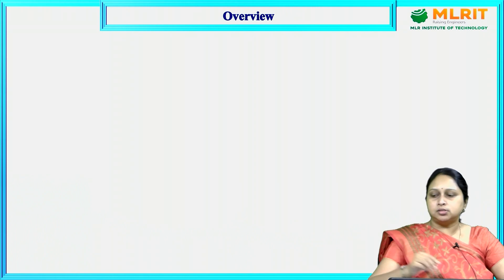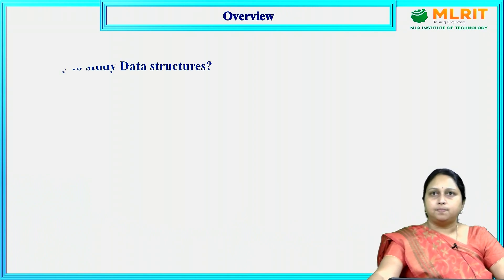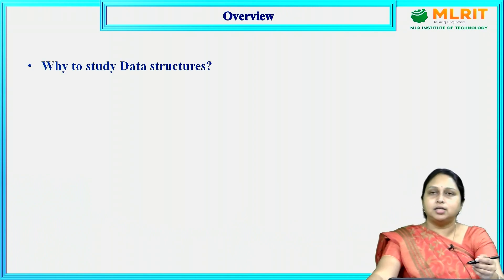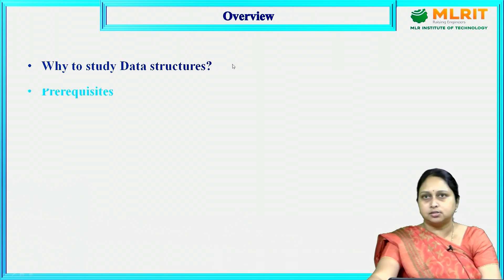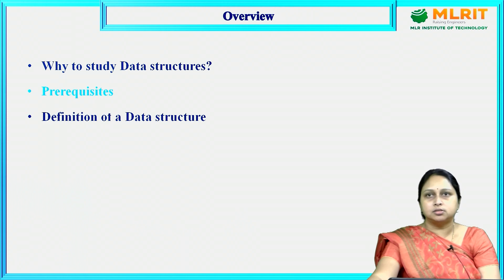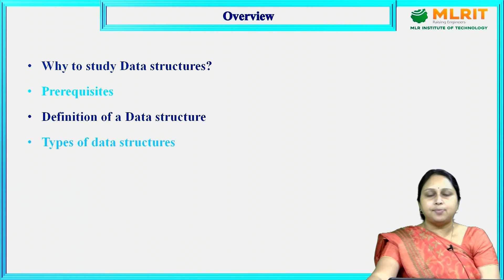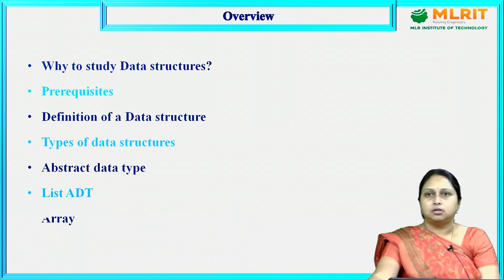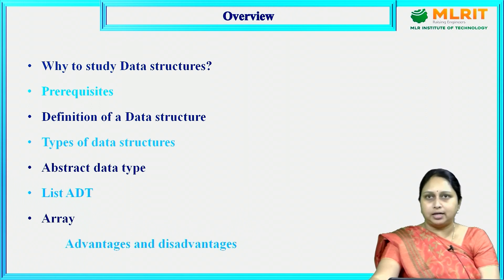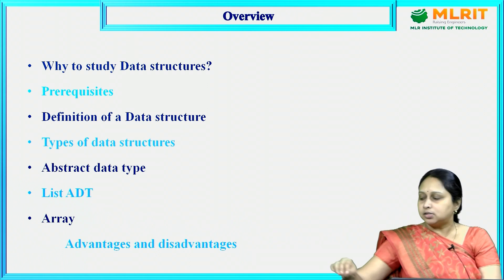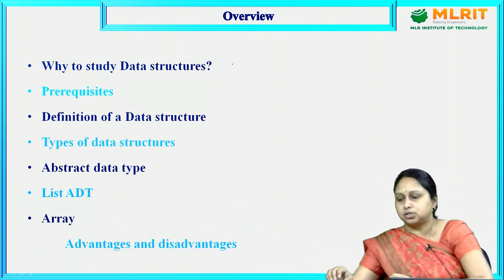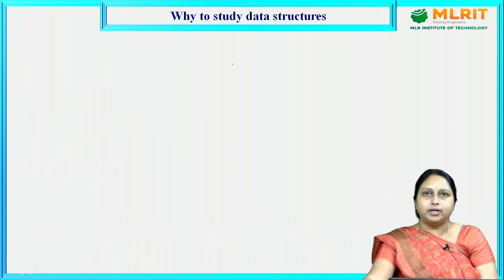Let us see the overview of the course. Here we are going to study about what is data structures, why to study data structures, what are the prerequisites for the course, what is the definition of data structure, what are the different types of data structures, what is an abstract data type, what is List ADT, and then we will be seeing about arrays and their advantages and disadvantages.